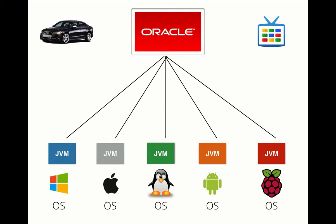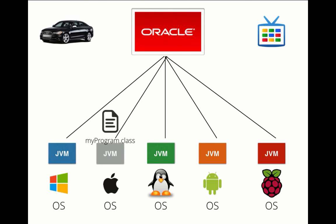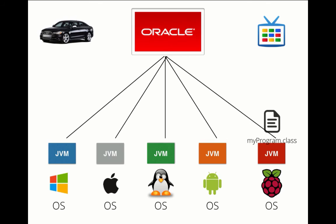Oracle releases a Java virtual machine for every single operating system — or most every operating system that's widely used. The Java virtual machine's job is to communicate with each operating system individually. But each Java virtual machine knows how to communicate with your class file, which was turned into bytecode. And so it really does allow you to write once and run everywhere.